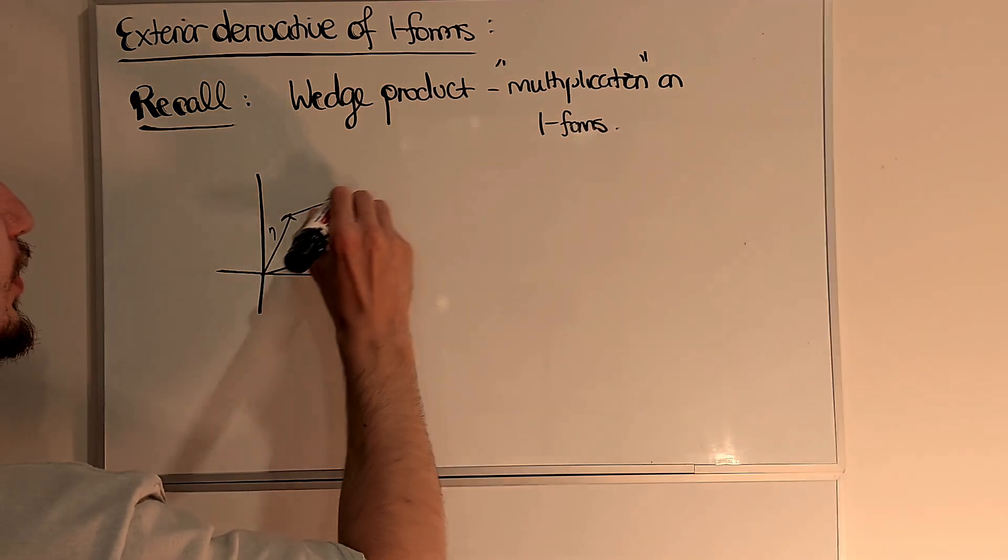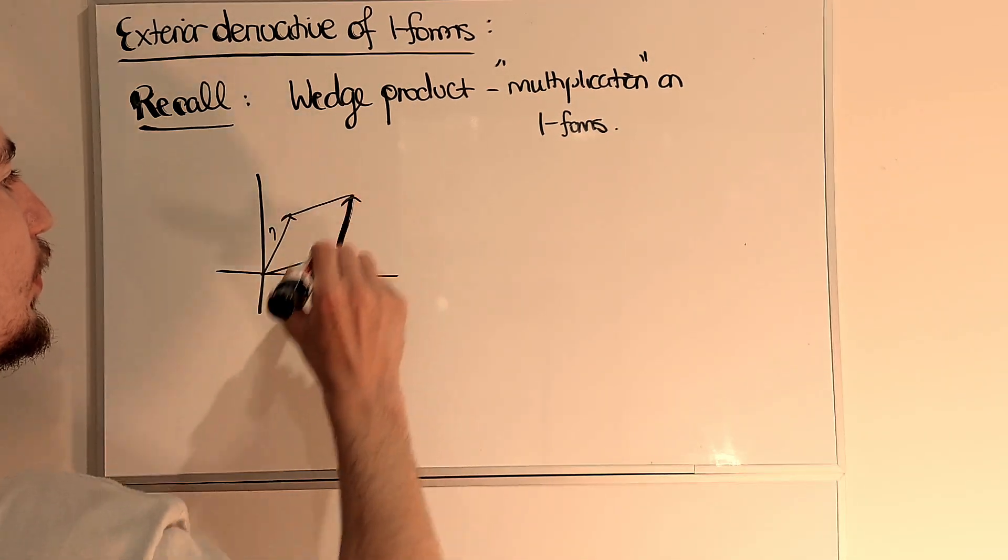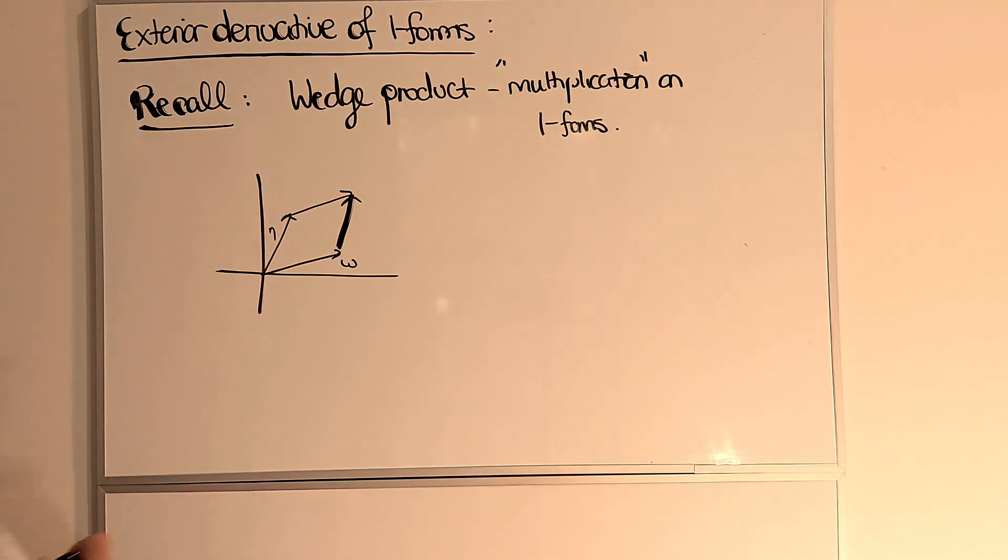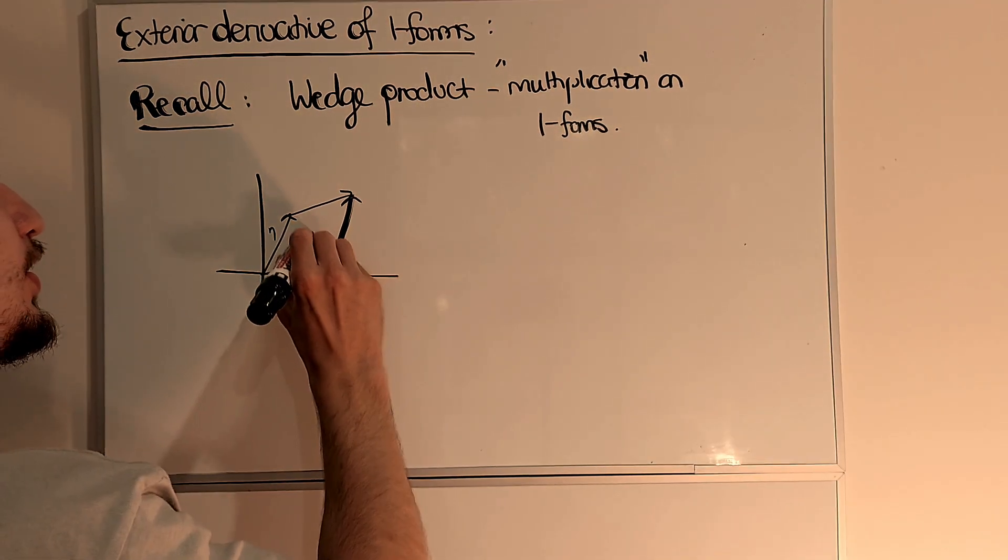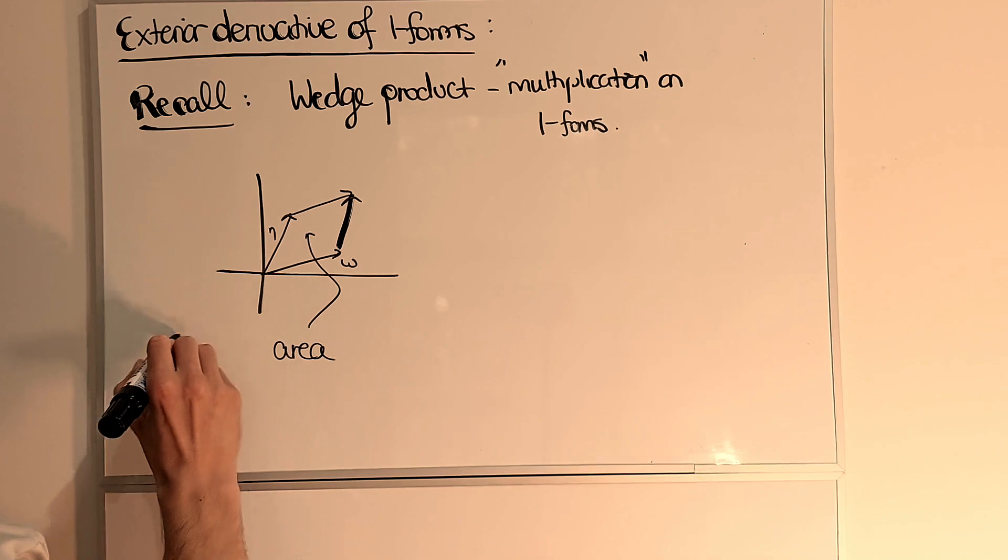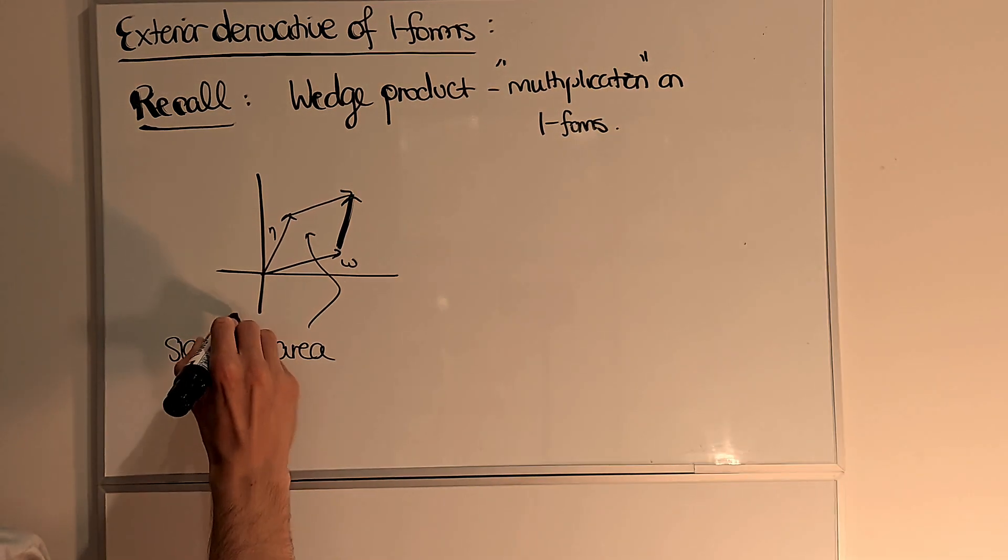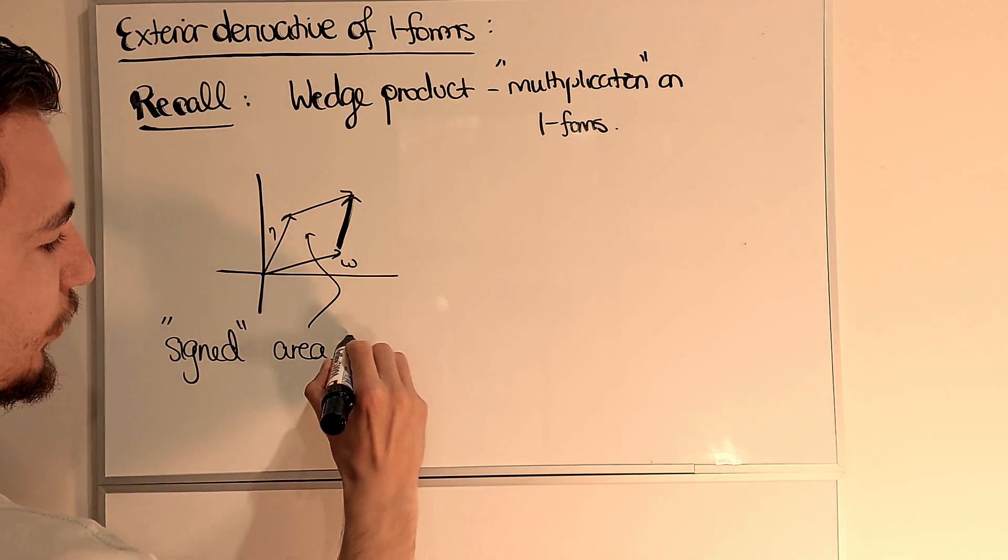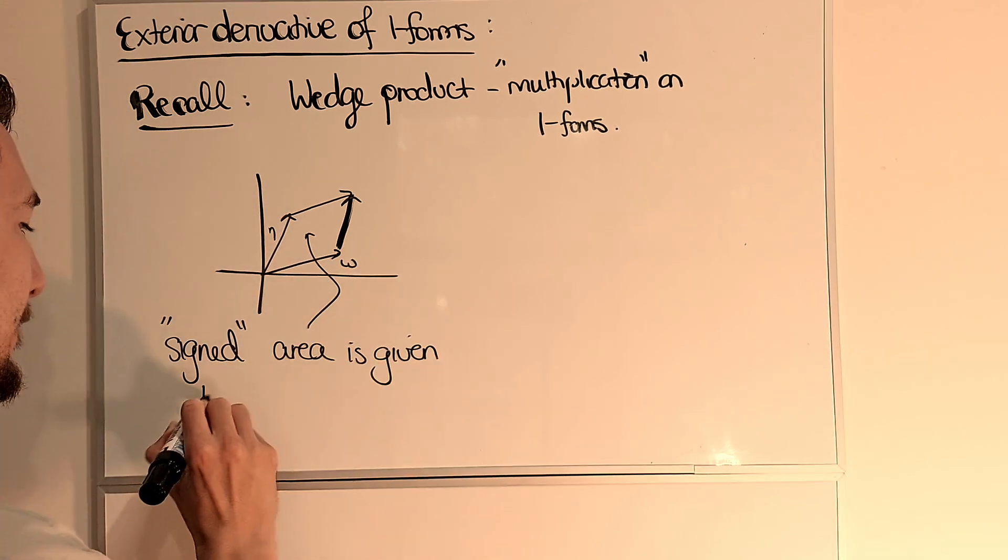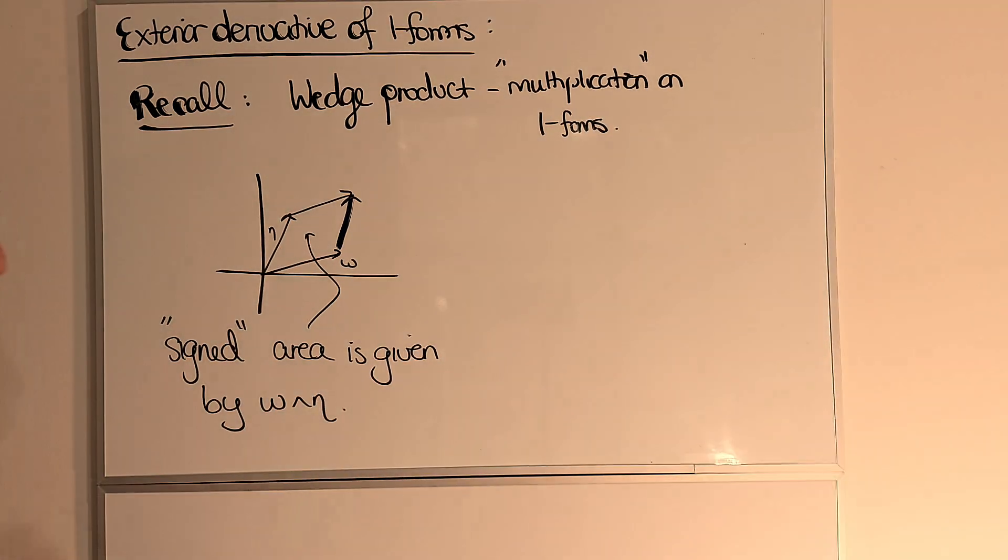Then I can look at the parallelogram formed by these one-forms and the area, to be precise, signed area, meaning it can be negative, is given by omega wedge eta.